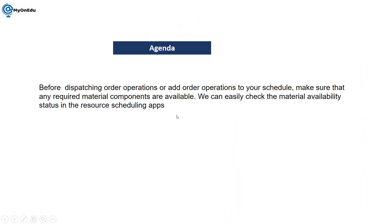Before dispatching any order operation, or to add that order operation to your schedule, make sure that any required material component should be available. So before dispatching any operation through resource scheduling apps, you can check the material availability in the system.